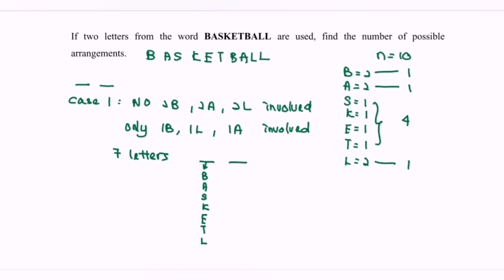So here we have seven possible choices for the first position. For example, if we choose L first, the remaining choices for the second position are B, A, S, K, E, and T — that's six options. Multiplying: 7 × 6 = 42 arrangements for Case 1, where no repeated pairs are involved.